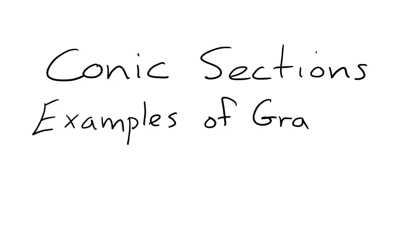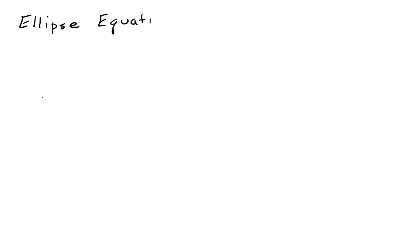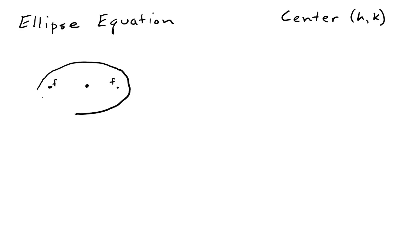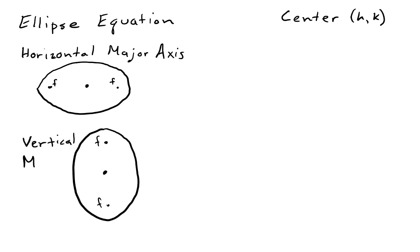Welcome to Conic Sections, Examples of Graphing Ellipses. In the previous video, we constructed an ellipse and derived the equation of an ellipse. An ellipse has a center with coordinates h, k, and two foci that are on opposite sides of the center the same distance away. If the foci are to the left and right of the center, the ellipse has a horizontal major axis. If the foci are above and below the center, the ellipse has a vertical major axis.